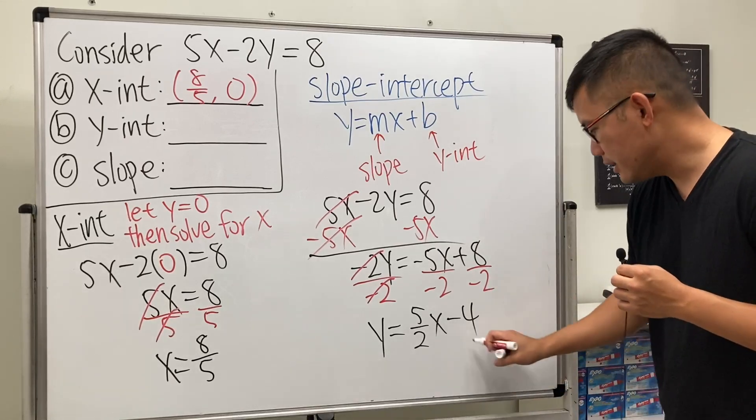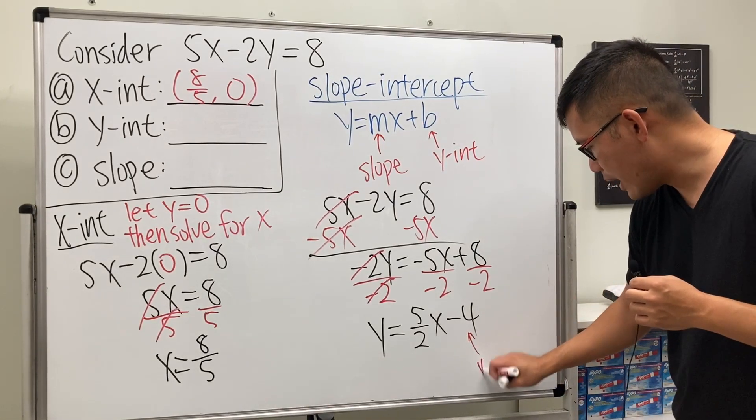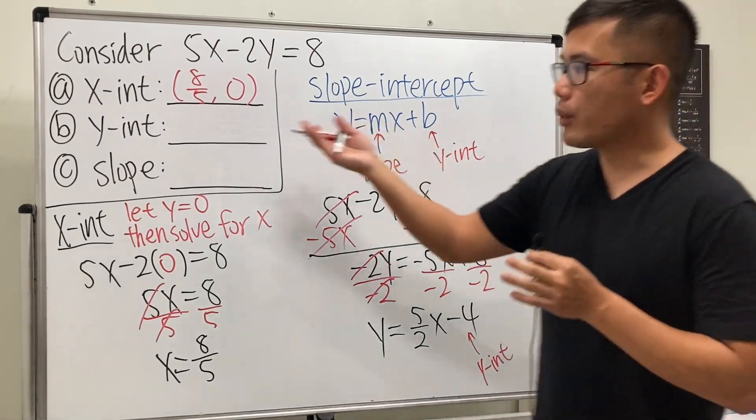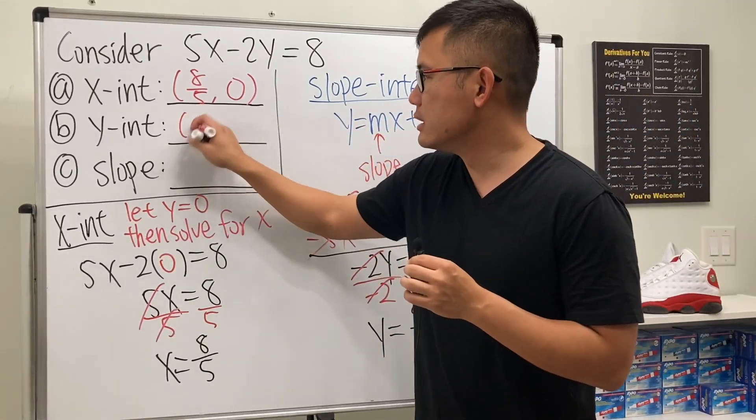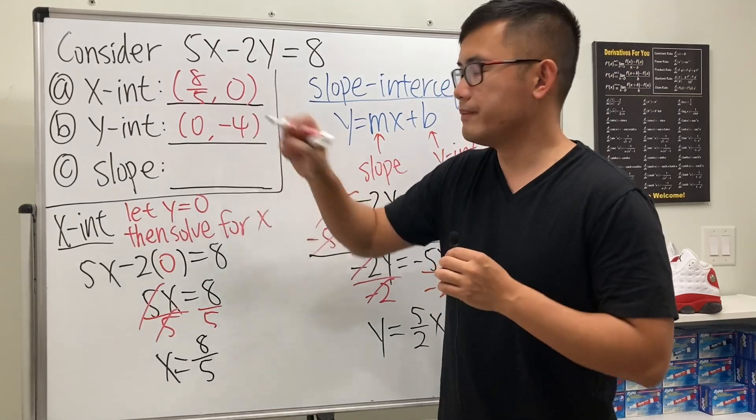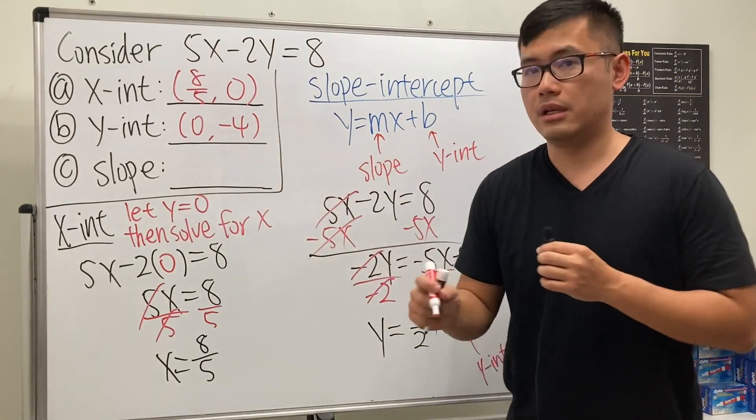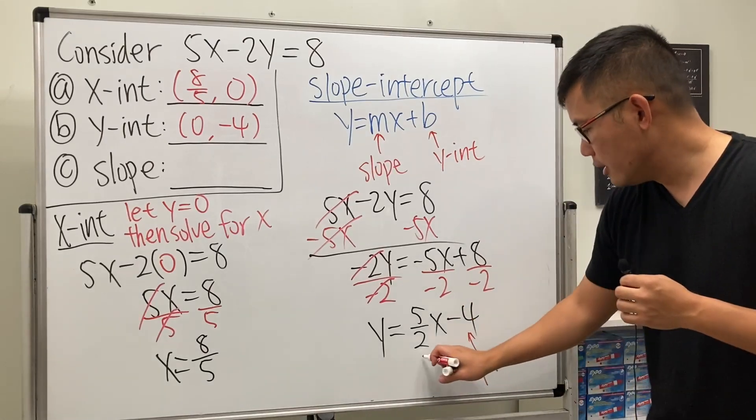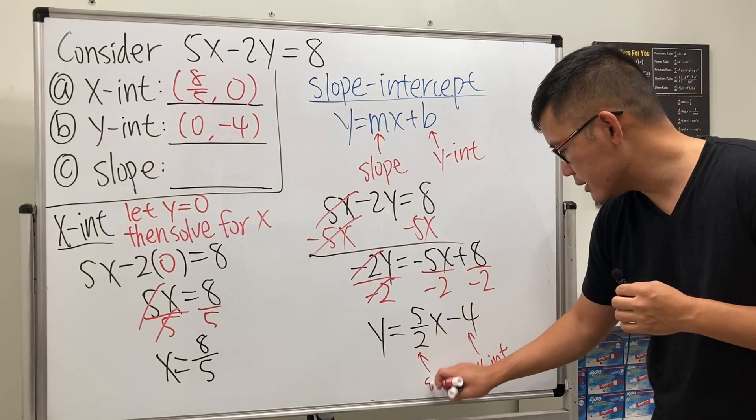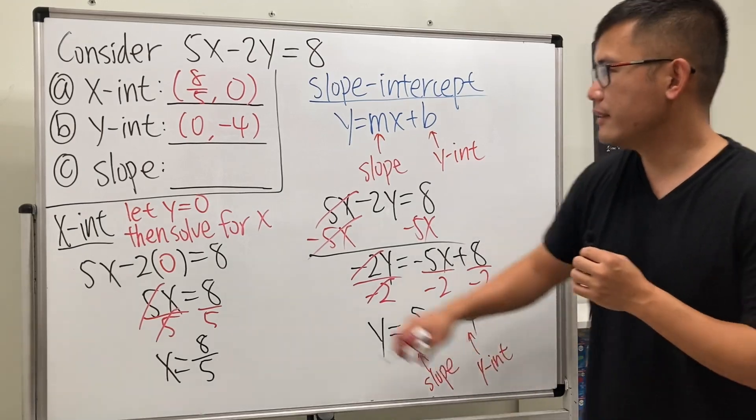As we can see, the y-intercept is -4, but I'll write the answer as (0, -4) because this shows when x = 0, we get -4. And the slope is exactly 5/2. Done!